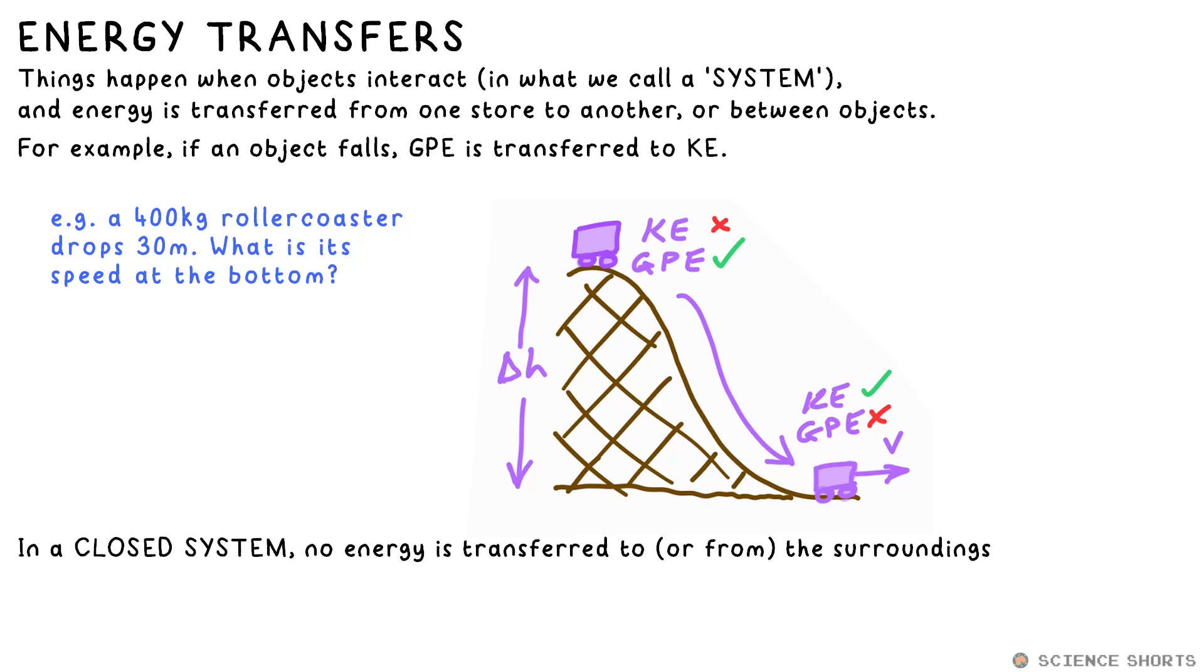Okay, we should really say that its GPE store is decreasing and its kinetic energy store is increasing instead, but all that really matters is that at the bottom, it's lost that GPE using this height here, so we can say GPE lost equals kinetic energy gained. GPE equals KE.